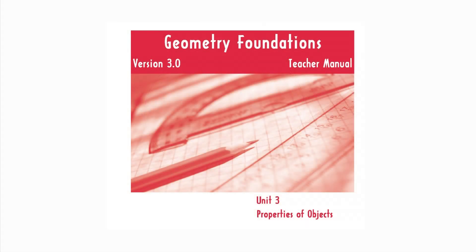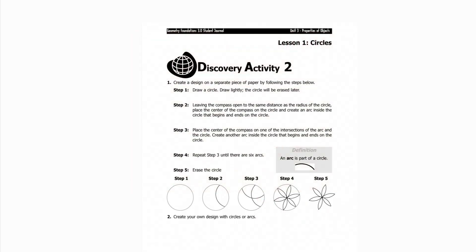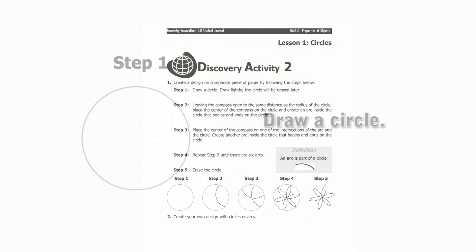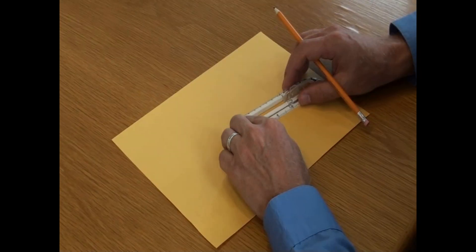In Unit 3, students will have the opportunity to draw a design using the compass in Lesson 1, Discovery Activity 2. I'm going to demonstrate the five steps to create the design. The first step is to draw a circle with a compass.